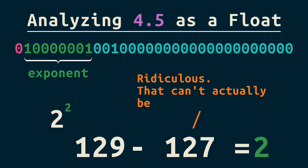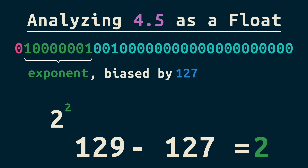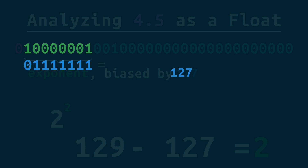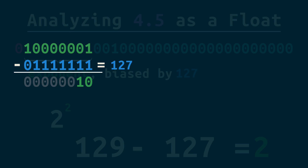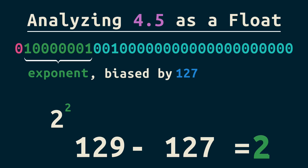That can't actually be how it works — but it is how it works. 127 is what we call the bias. Here it is in binary. We subtract this bias off to get the actual exponent: 1.0 here, which is 2.